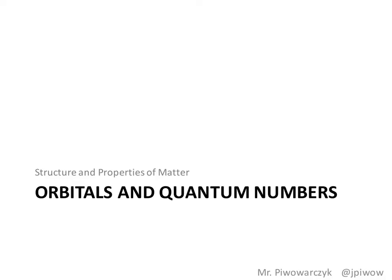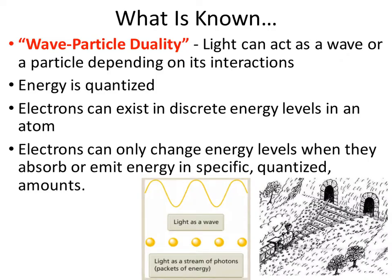Hey folks, welcome to this episode on orbitals and quantum numbers. As we've seen before with light, we saw that light behaved as a duality — it could act as a wave and a particle depending on its interactions. From these studies, we also saw that energy was quantized, and that was given to us by Einstein.